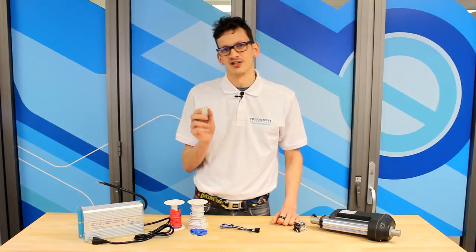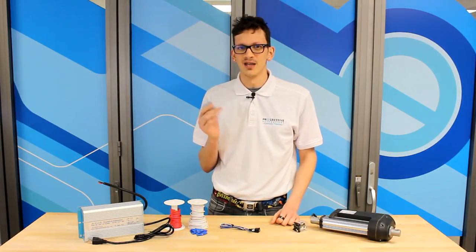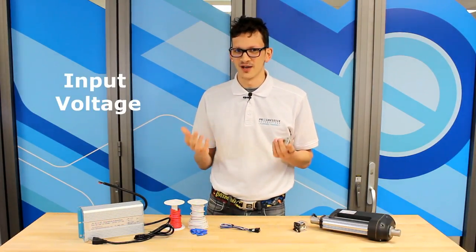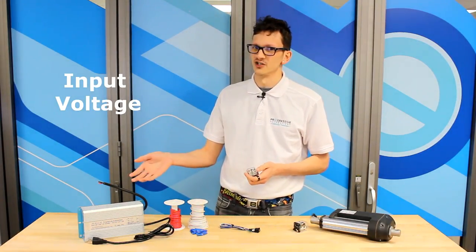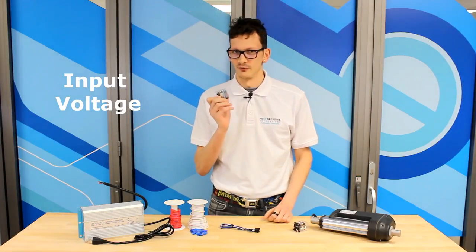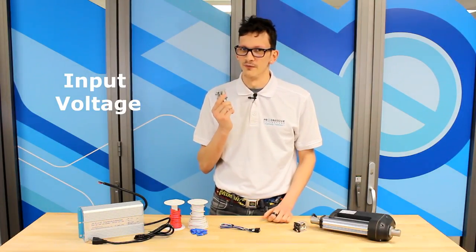When choosing a relay, you must pay attention to the following specifications. Input voltage: The input voltage must match the signal that you will use to control the relay. Since I'm using a 12 volts DC power supply for the linear actuator, I will use the same voltage to control the relay, meaning the relay must be rated for 12 VDC.